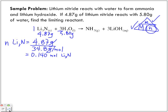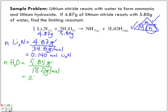So then let's find the number of moles of water. We know the mass that we're using and we want to find the number of moles. So we have 5.85 grams divided by the molar mass of water, which is 18.0 grams per mole. Grams cancel out, and we're equal to 0.322 moles of H₂O.